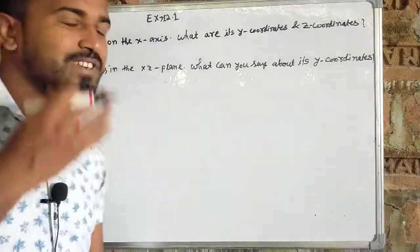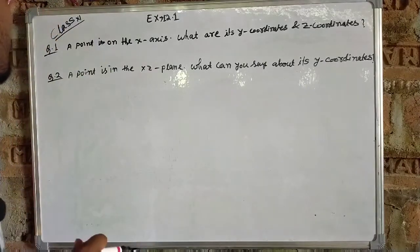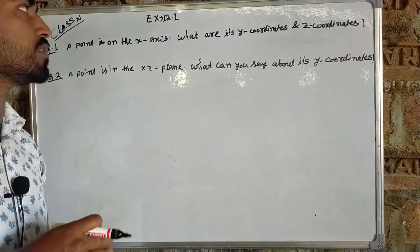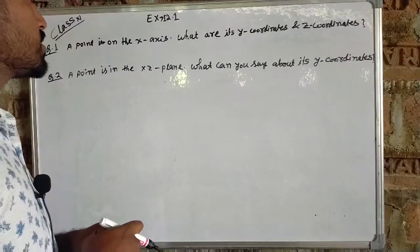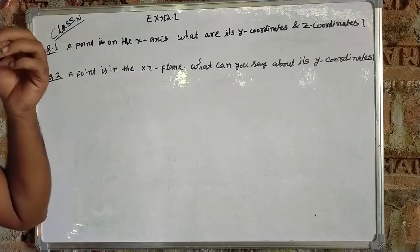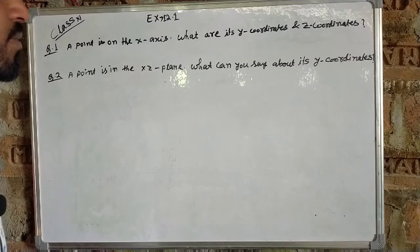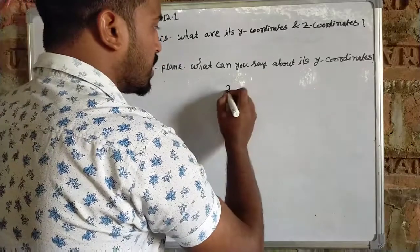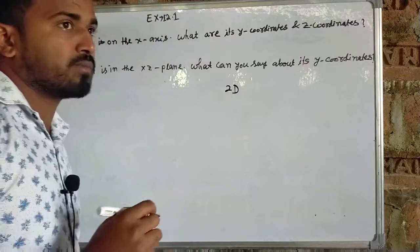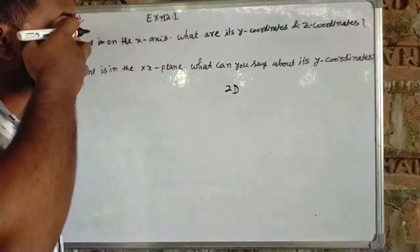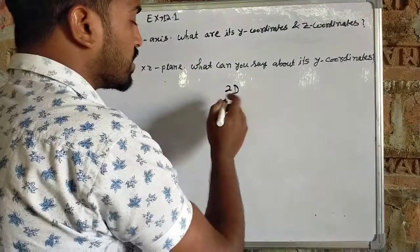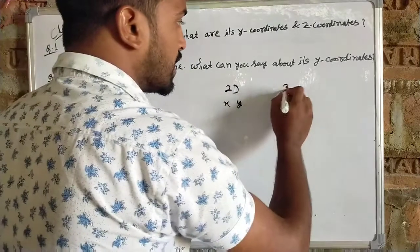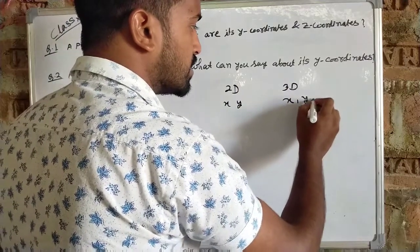Hey guys, welcome to my YouTube channel. This is Class 11 Maths, Chapter 12, Exercise. We have coordinate geometry, and we remember 3D which means x, y, z axes.